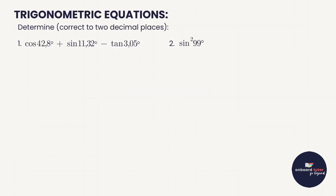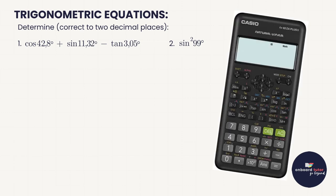First things first — one section of our Grade 10 syllabus was understanding how to use our calculator. The first thing to check when working with trigonometry on your calculator is that it is in degree mode. Look for that little letter on the display, and if it's not in degree mode, you can change it by selecting the mode option. Once that's in place, your calculator should handle these calculations fine.